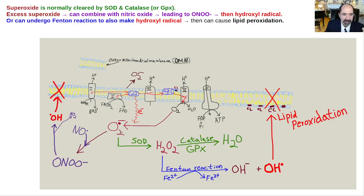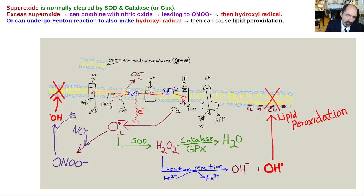But sometimes superoxide can undergo a series of reactions and become a hydroxyl radical — there are actually several ways that can happen. The hydroxyl radical can destroy the intermitochondrial membrane through a process called lipid peroxidation. It can also destroy proteins and DNA. The real question is why does this happen and what can we do to avoid it — and you're going to find out there's a lot you can do.